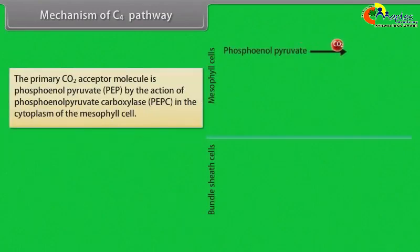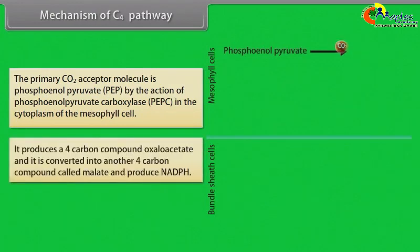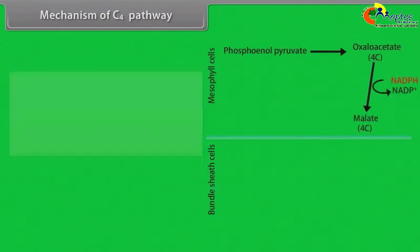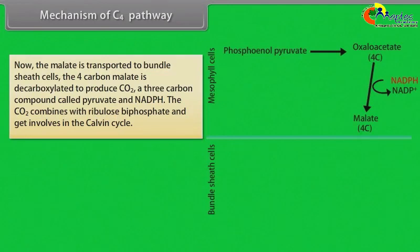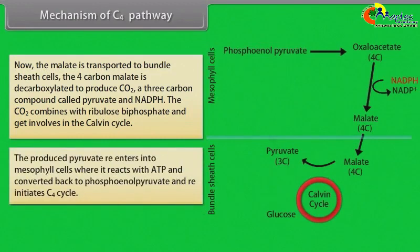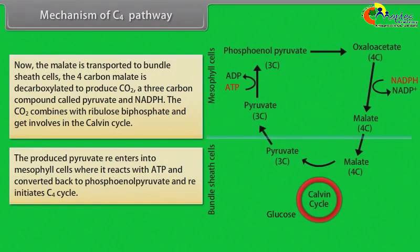Mechanism of C4 pathway: The primary carbon dioxide acceptor molecule is phosphoenol pyruvate. By the action of phosphoenol pyruvate carboxylase in the cytoplasm of mesophyll cells, it produces a 4-carbon compound oxaloacetate, which is converted into another 4-carbon compound called malate, producing NADPH. Now the malate is transported to bundle sheath cells. The 4-carbon malate is decarboxylated to produce carbon dioxide, a 3-carbon compound called pyruvate, and NADPH. The carbon dioxide combines with ribulose bisphosphate and gets involved in the Calvin cycle. The produced pyruvate re-enters mesophyll cells where it reacts with ATP and is converted back to phosphoenol pyruvate, re-initiating the C4 cycle.